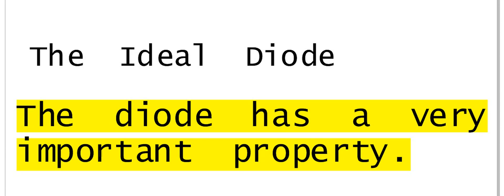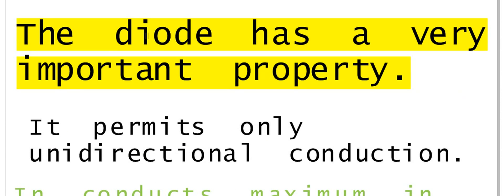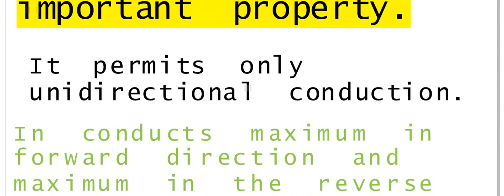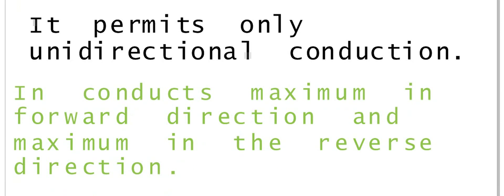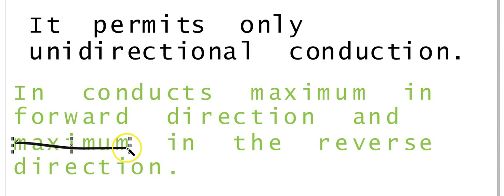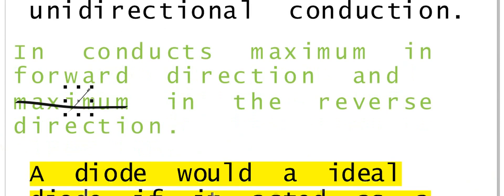The ideal diode. The diode has a very important property that it permits only unidirectional conduction. It conducts maximum in the forward direction and minimum in the reverse direction.